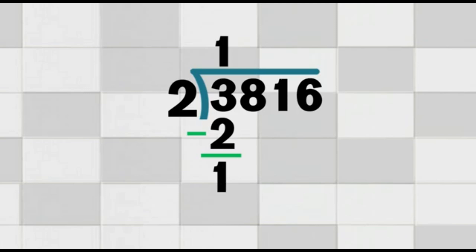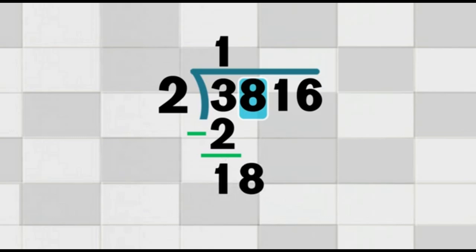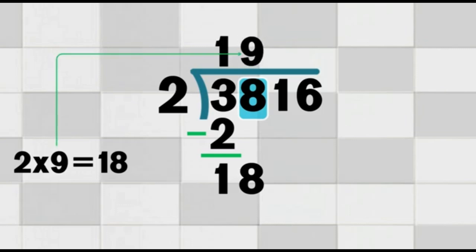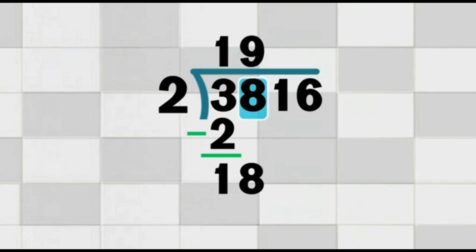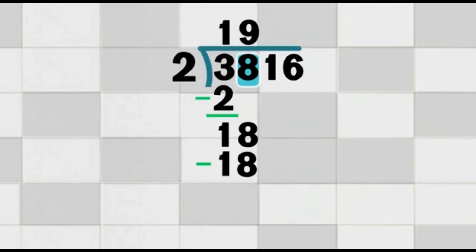Now, we bring down the next digit in the dividend. That digit is 8. We place the 8 next to the 1, and now we are working with the number 18. We ask: how many times does 2 go into 18? 2 times 9 equals 18 — perfect. We write 9 above the 8. Now the answer on top is 19. Multiply: 9 times 2 equals 18. Subtract: 18 minus 18 equals 0. We write the 0 under the 18.